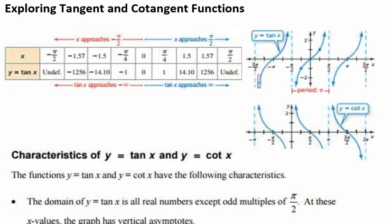Notice here that we have our tangent functions. As x approaches negative pi over 2, our tangent of x approaches negative infinity, and as x approaches positive pi over 2, our tangent function approaches positive infinity.